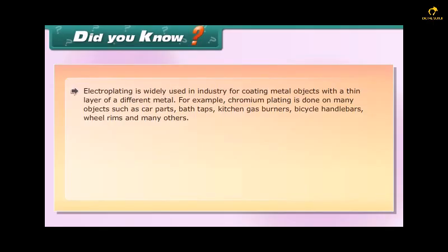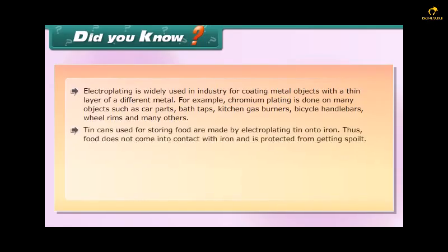Tin cans used for storing food are made by electroplating tin onto iron. Thus food does not come into contact with iron and is protected from getting spoiled.